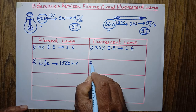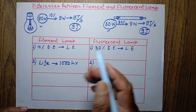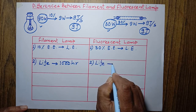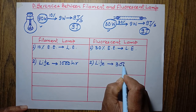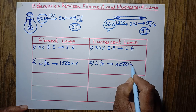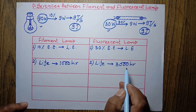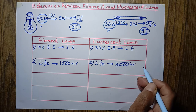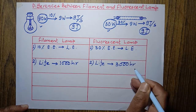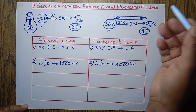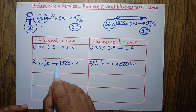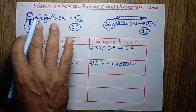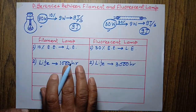In the case of the fluorescent lamp, its life is about 3000 hours. It will give us light for 3000 hours — its working time is 3000 hours. It is designed in such a way that it runs for this much longer time period. This is another basic difference between the filament lamp and the fluorescent lamp.